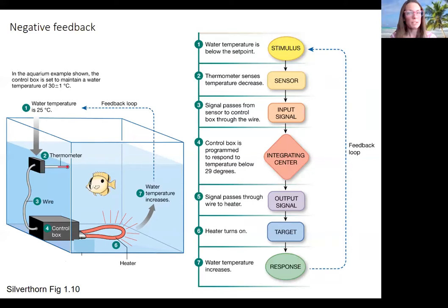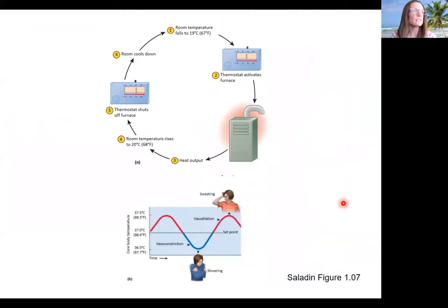So hopefully that was helpful. Here's a diagram from your book that's a little bit simpler. I think it's also nice. So this is the thermostat example here up top. The room temperature falls. Thermostat activates. Tells the heat to go on. Temperature rises. Here's our negative feedback. The thermostat turns off the furnace. And then this is going to, if the room cools too much, it's going to turn on again.